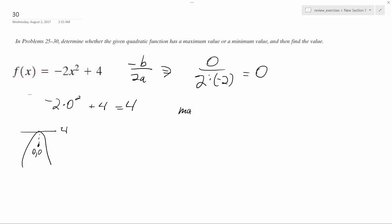Alright, so maximum is 0 comma 4. So y equals 4 when x equals 0. And that's it!